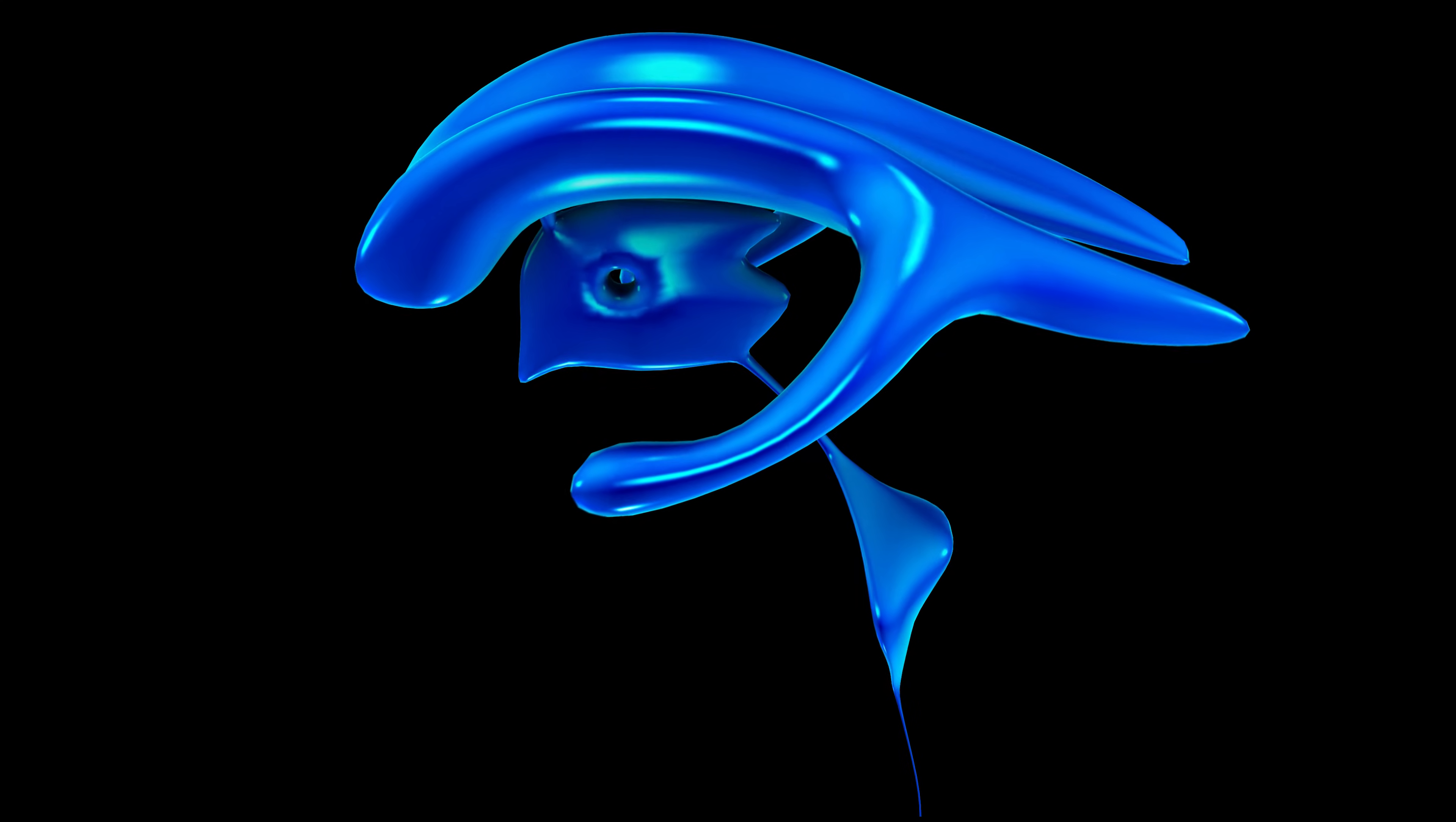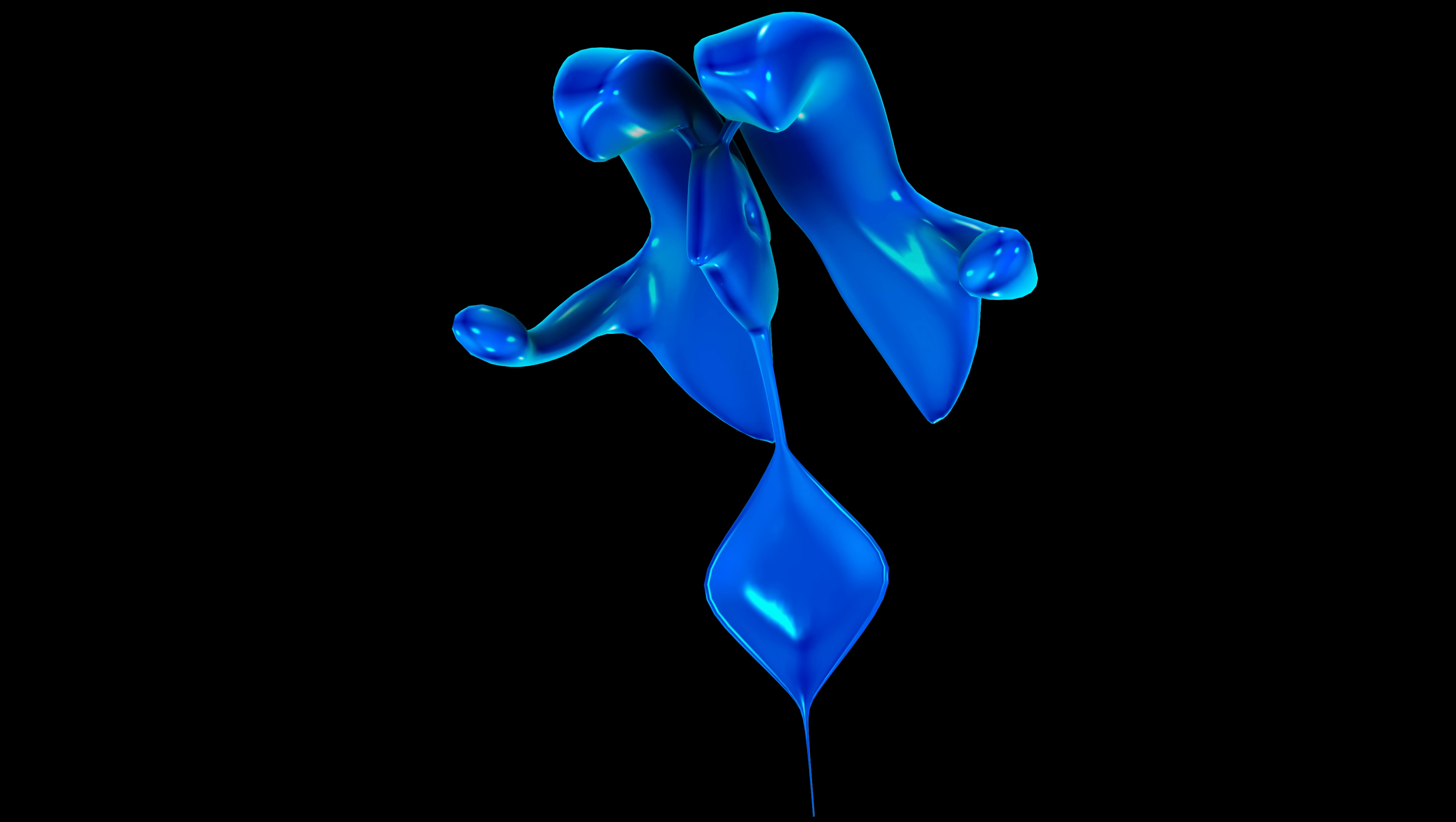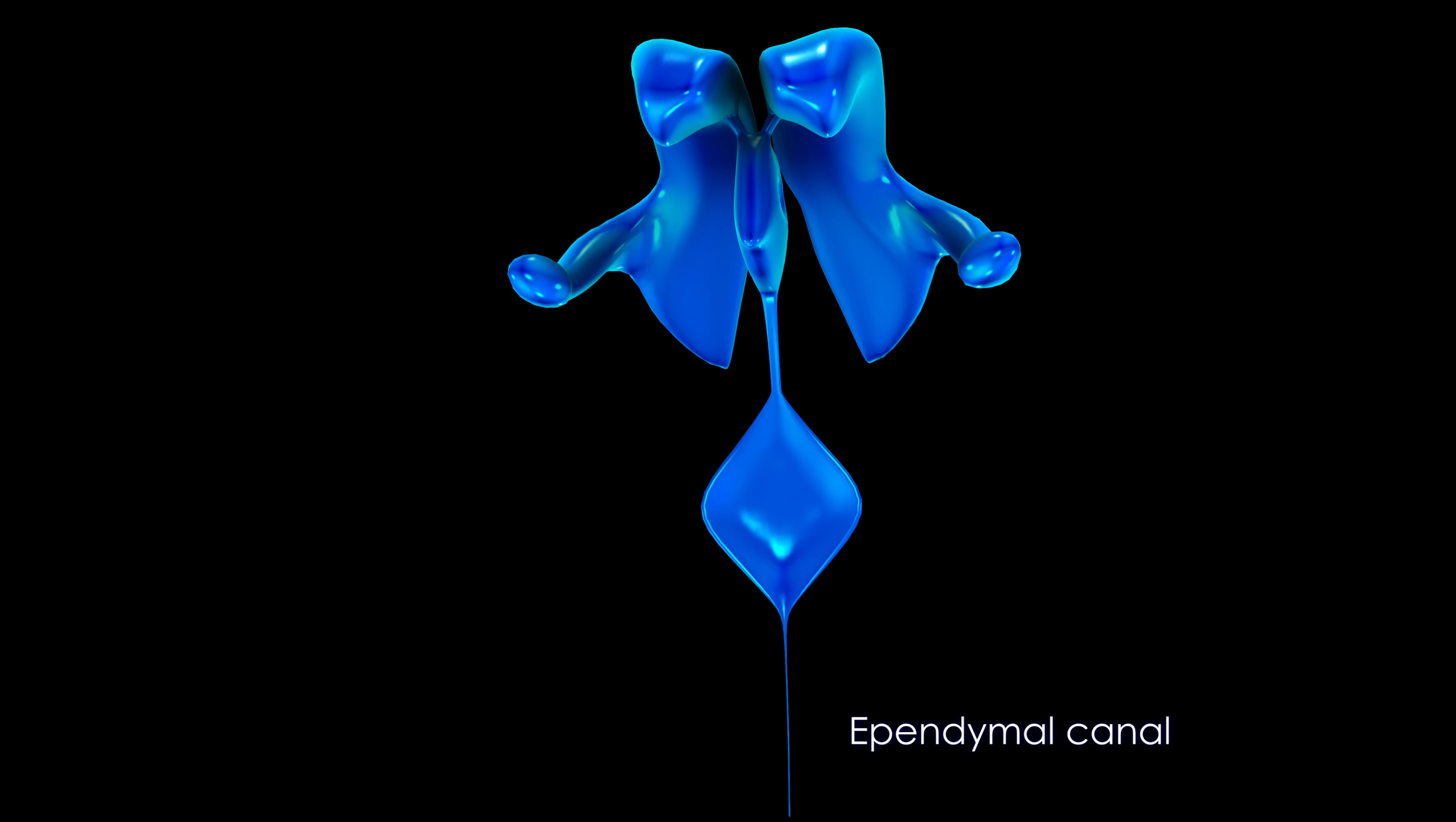The ventricular system consists of four ventricles connected by many channels. It is connected to the central canal of the spinal cord.